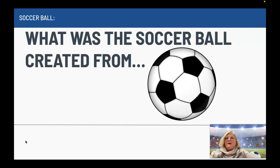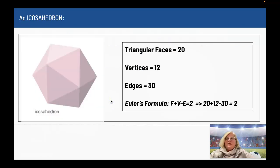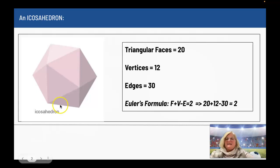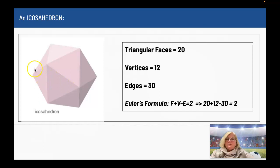What was the soccer ball created from? Over on the left side of your screen you should see an icosahedron. The icosahedron is a platonic solid, so it is a polyhedron. The triangular faces are 20 — there are 20 triangles.